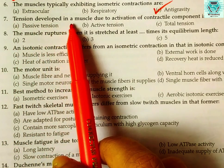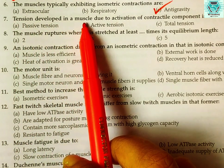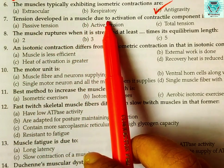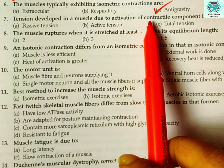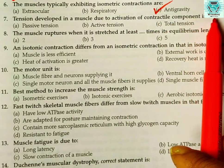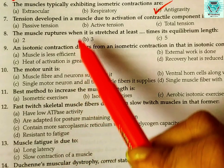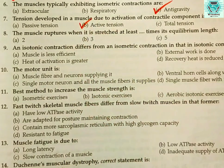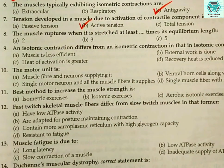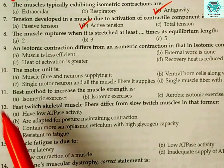Number seven: tension developed in a muscle due to activation of the contractile component is called — passive tension, active tension, total tension, or none of the above? The answer is active tension.